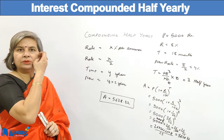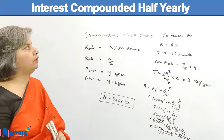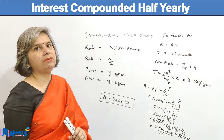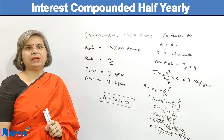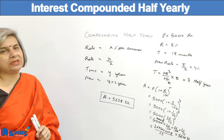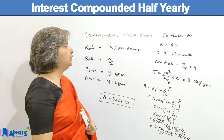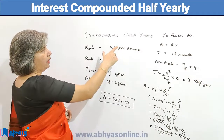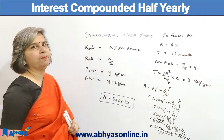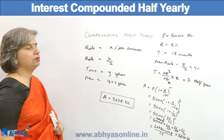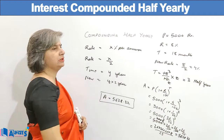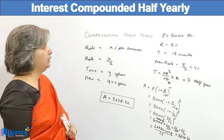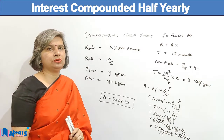To sum up: compound interest compounded half yearly means we first analyze how many half years are there in a year. We know a half year equals six months, so in one year there are two half years. The rate was x percent per annum, so the new rate is x divided by 2. The time is y years, so the number of half years becomes y multiplied by 2. Then we solve it like a normal compound interest question.